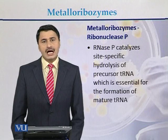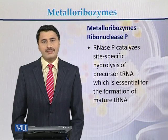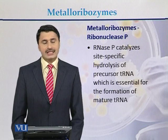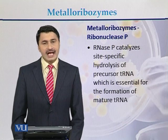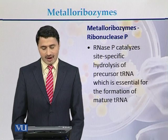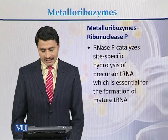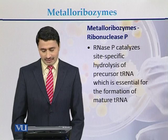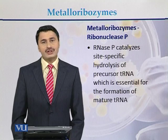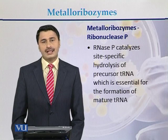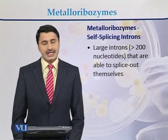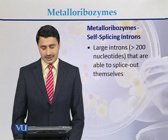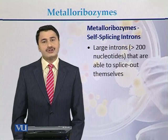Metalloribozymes are in two forms. The first form is called ribonuclease P. Ribonuclease P catalyzes site-specific hydrolysis of precursor transfer RNA, which is essential for the formation of mature transfer RNA. On the other hand, the second type of metalloribozymes are self-splicing introns.